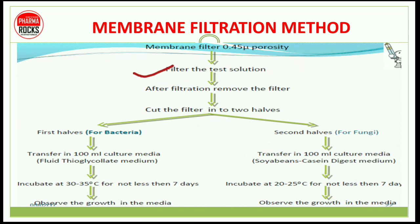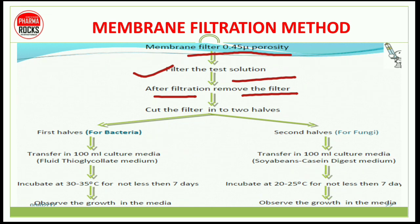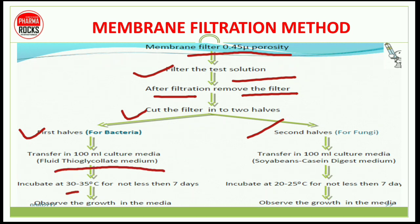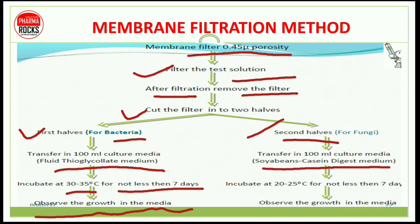Filter the test solution using a membrane filter with 0.45 micrometer porosity. After filtration, remove the filter and cut it into two halves. The first half is for bacteria and the second half is for fungi. Transfer the first half into 100 ml fluid thioglycolate medium (FTM) and incubate at 30–35°C for not less than 7 days. Transfer the second half into 100 ml soya bean casein digest medium and incubate at 20–25°C for not less than 7 days. Observe the growth in the media.